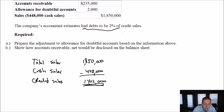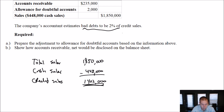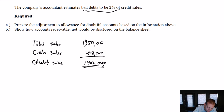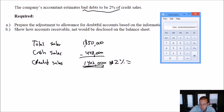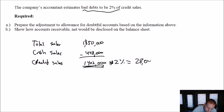Credit sales are the ones that might go bad, so I take a percentage of my credit sales when I want to figure out my bad debts. In intro accounting, you'll generally be given this number — they'll say the company's accountant estimates bad debts to be X. The way they do that is they base it on past experience, looking at historical collection records. This company said it's 2% of credit sales, so let's compute: $1,402,000 times 2% equals $28,040.